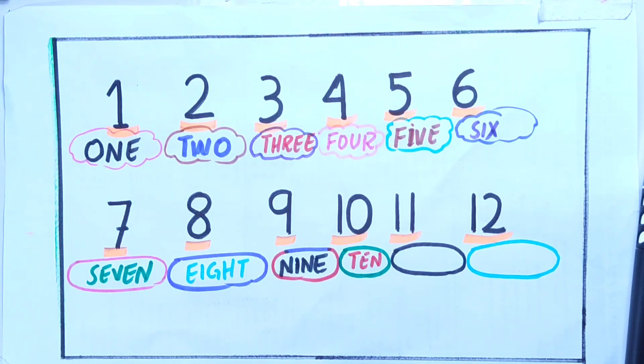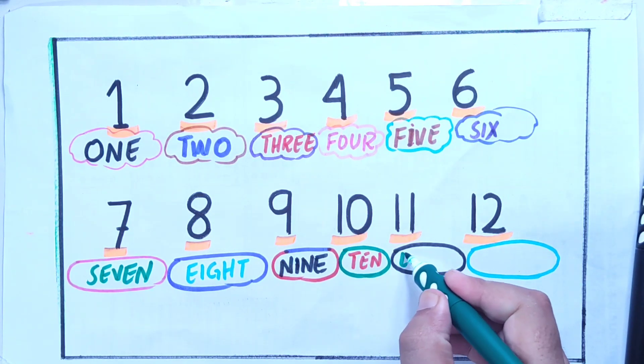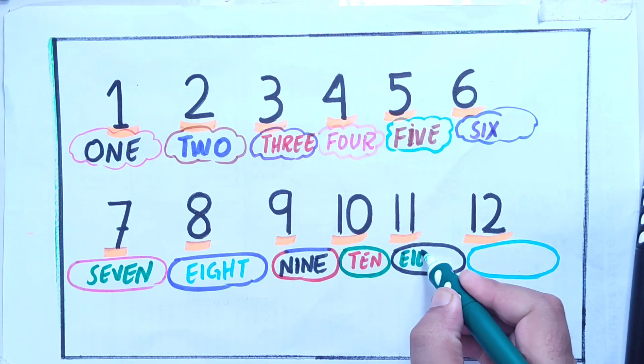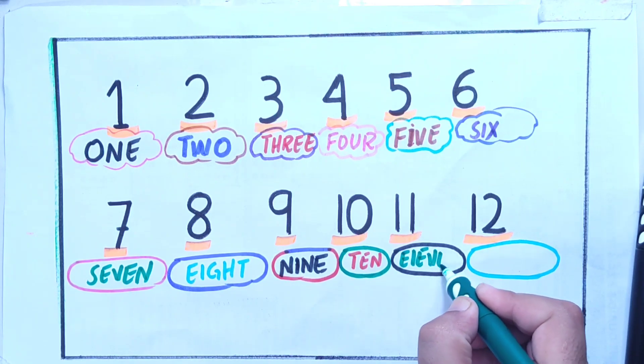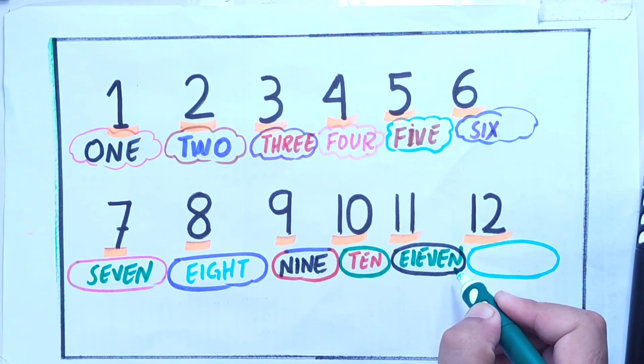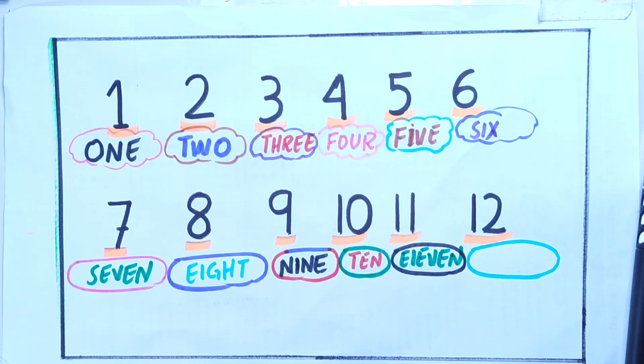And eleven with dark green color: E-L-E-V-E-N, eleven. So you have to understand like this, eleven.